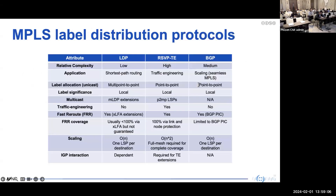Comparing label distribution protocols: LDP has low complexity, automatically discovers neighbors and distributes labels, but has no traffic engineering capability. RSVP-TE is complex but supports traffic engineering. MP-BGP is medium complexity but is mainly used for advertising service labels. In practice, LDP and RSVP-TE are used for establishing LSPs between routers in the network.